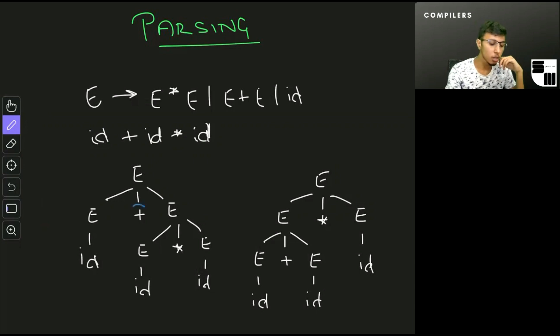One thing to note here is that in the left tree that I have, because the plus is closer to the root, it means that the id times id is going to be performed first and the addition is going to be performed later. If I were to write this down, it would be something like this: it would happen in the order id plus id times id.